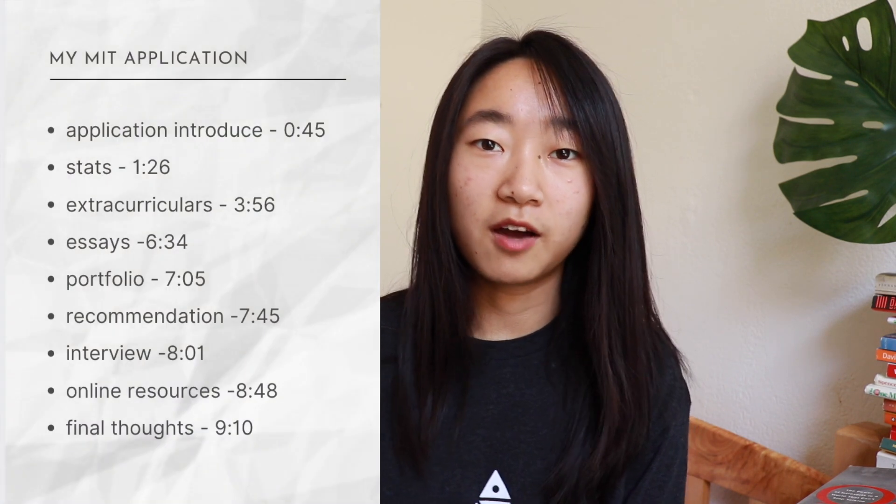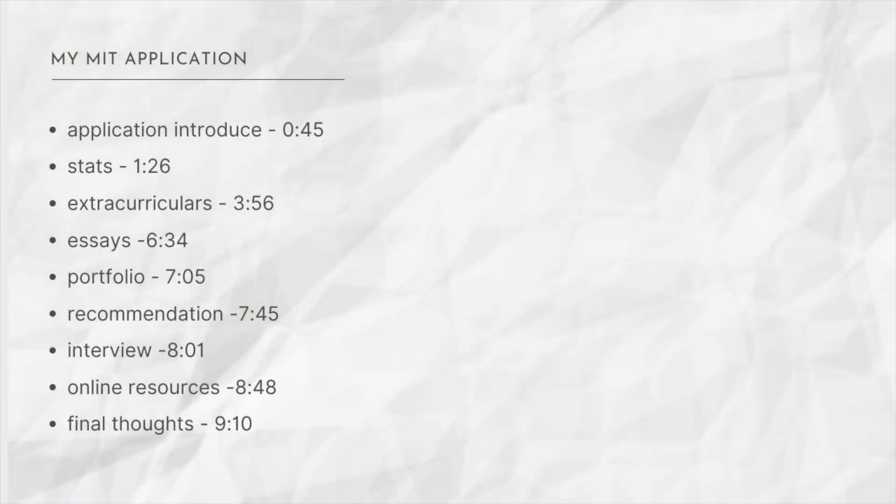With that being understood, let's jump right into the application. There are two ways to apply to MIT: one is the MIT application, which is different from the Common App, and the other way is through QuestBridge. QuestBridge is a non-profit program that helps low-income but high-achieving students get higher education at leading institutions. I applied to MIT through QuestBridge as a QuestBridge finalist. Both the MIT application and the QuestBridge application are similar but differ a little bit in essay structure.